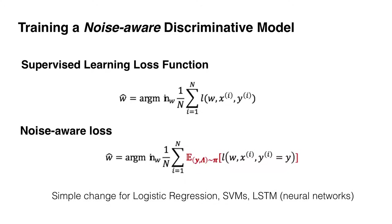Everything we've implemented in Snorkel for the discriminative model has this loss function implemented. It's not a particularly complicated thing — it's provided to you out of the box in all the Snorkel stuff that we support.